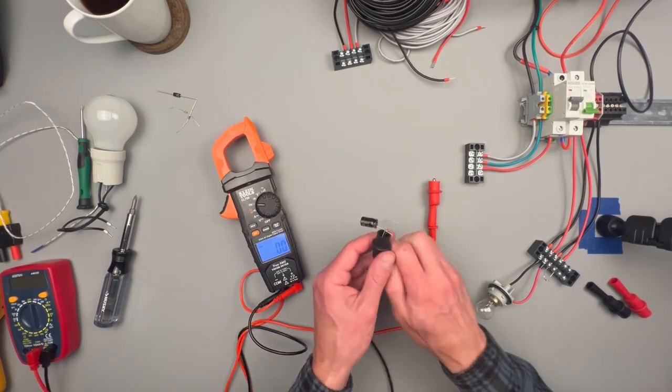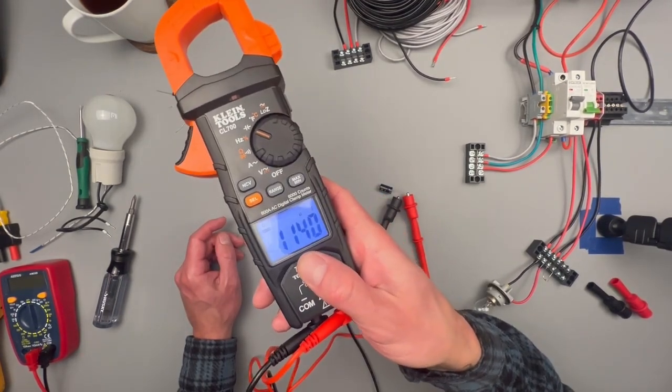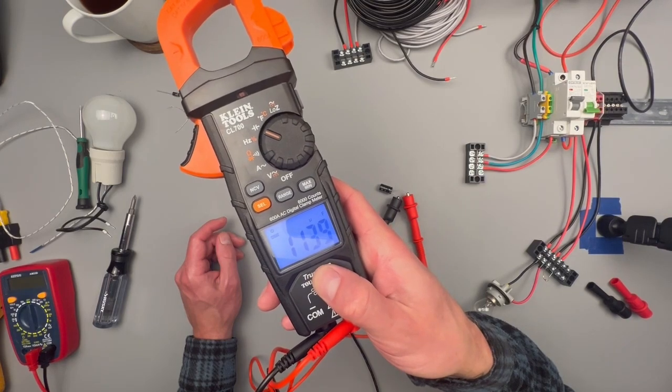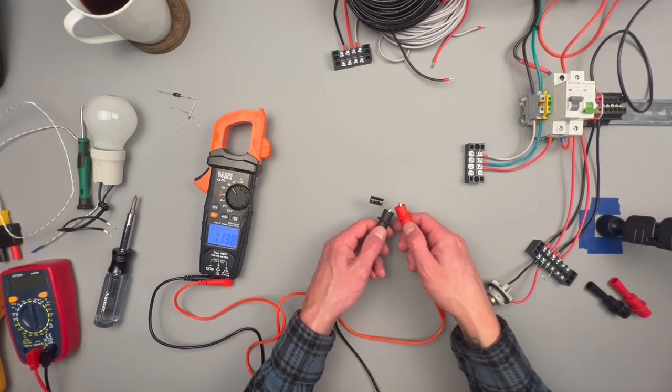Next up, we have our capacitive value. It's charging it up. It auto ranges to microfarads, which is nice. And then it's coming back with a value of about 1140. And this capacitor is rated for 1000 microfarads.